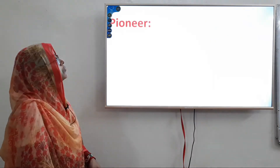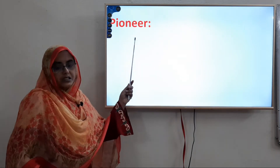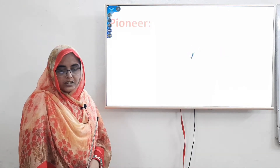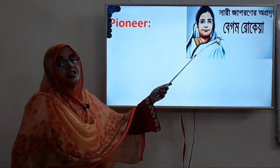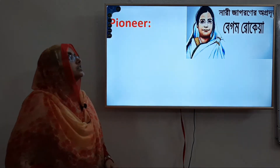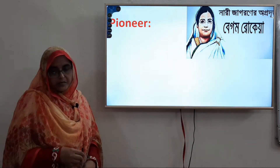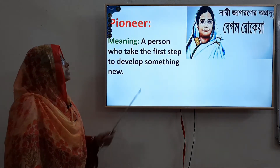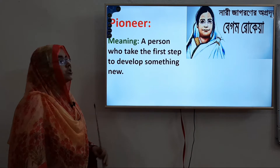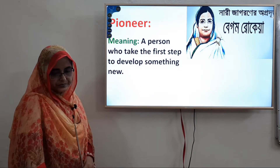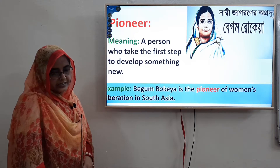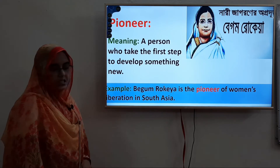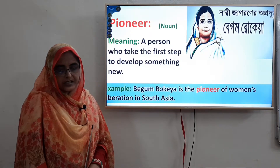Here is the keyword. The word given on the screen is: Pioneer. The picture shows Begum Rokhya — on the screen we see 'Nari Jagoronir Ogrodut Begum Rokhya.' So Begum Rokhya is the pioneer. Pioneer means a person who takes the first step to develop something new. Here is the sentence: Begum Rokhya is the pioneer of women's liberation in South Asia. It is a noun form.